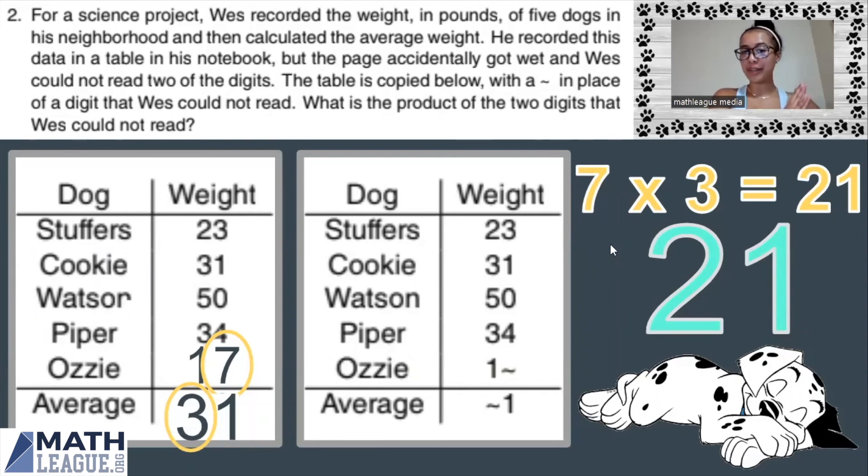And now we have even more comprehensive data about Stuffers, Cookie, Watson, Piper, and Ozzie. I hope this helps and see you back next time.